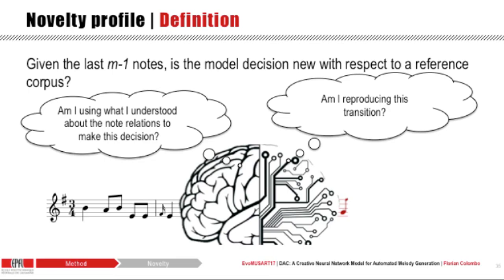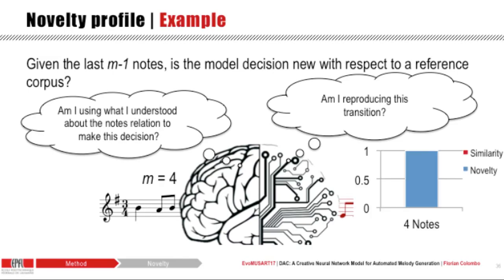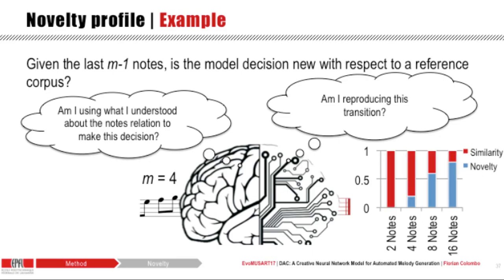Given the last m-1 notes in a melody, is the model's decision new with respect to a reference corpus? In other words, it is as the Deep Artificial Composer asking itself: am I reproducing this transition, or am I using what I understand about note relationships to make this decision? To build a novelty profile for a melody, we start with the first possible transition, illustrated here for a motif of four notes. If a decision is never found in the training corpus, the novelty for that motif size would be 1 and the similarity 0. Answering this for each note transition and different motif sizes, we obtain a novelty profile where novelty increases for bigger motif sizes.